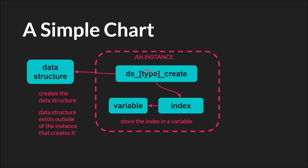Whenever you create a data structure with DSList, DSMapCreate, etc., it creates that data structure somewhere else — outside the instance. I don't know exactly how GameMaker Studio 2 handles it under the hood, but it creates it somewhere else and returns the index, which is just an integer that you save to a variable. The data structure exists outside of the instance that creates it. The only thing inside the instance is the variable holding the index. The most important takeaway is that the data structure is not existing inside the instance the way a normal variable would.